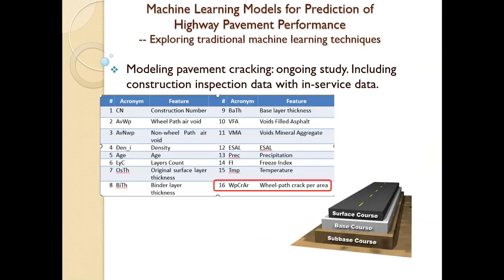This is a snapshot of the variables we're looking at. What's unique about our research is that most models — similar to 99% out there — use data collected after construction and then monitor it. Our hypothesis is that the quality of construction is also very important. We're looking at what happened during construction — including the layer structure: your subbase, base, and the asphalt concrete on top, plus any overlays applied later.